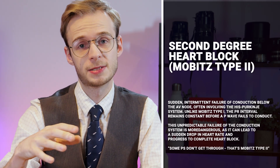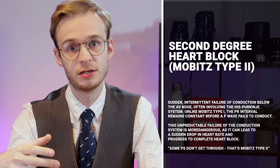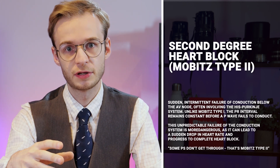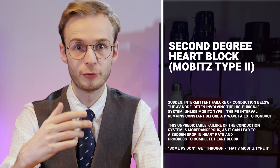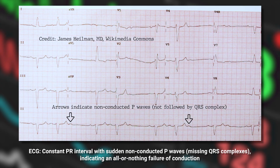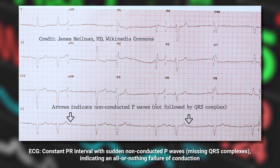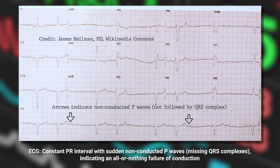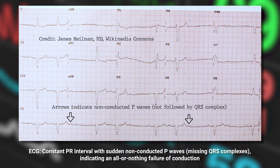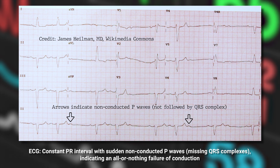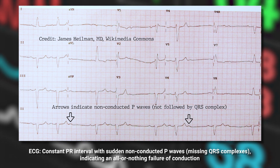Mobitz type 2 is different because the conduction problem is happening lower down — it's a sudden, intermittent failure of conduction below the AV node within the His-Purkinje system. Unlike Mobitz type 1, the PR interval remains constant because this is not delayed conduction but an unpredictable failure. It's more dangerous because it can lead to a sudden drop in heart rate and progression to complete heart block. On the ECG, we see a constant PR interval with completely unpredictable dropped QRS complexes.